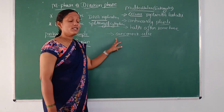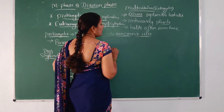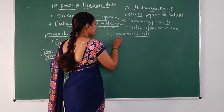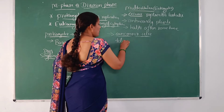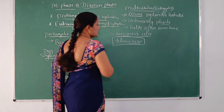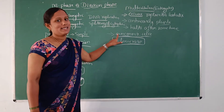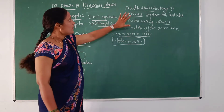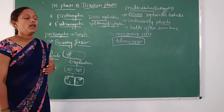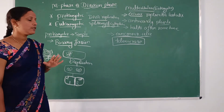In cancerous cells, there is uncontrolled cell division — without any control, the cells will divide. The uncontrolled cell division of cancerous cells is because of the presence of an enzyme called telomerase. The telomerase enzyme is responsible for the uncontrolled cell division of cancerous cells. In multicellular eukaryotic organisms, there are three types of cell divisions which happen.